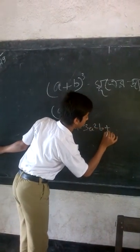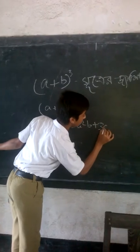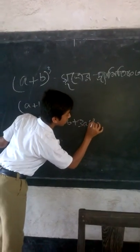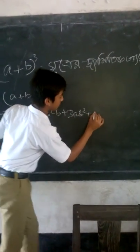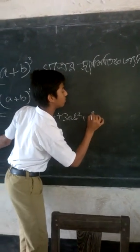A square B plus E, A square plus B square.